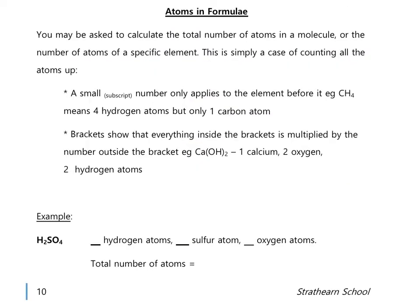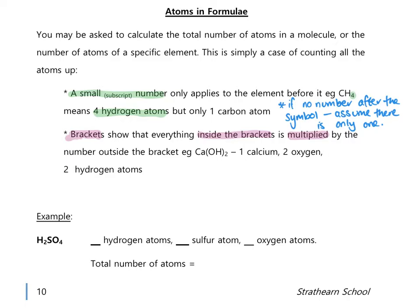Now we look at counting the number of atoms within a formula. You may be asked for the total number of atoms in a molecule or the number of atoms of a specific element. A small subscript number only applies to the element before it — for example in CH₄ the four means four hydrogen atoms but there is only one carbon. If there's no number after an element, assume there's only one.